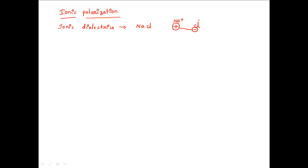In the equilibrium position, the distance between the ions is some value x. But whenever you apply an electric field onto this ionic crystal, the positive ion moves in the field direction and the negative ion moves in the opposite direction. The positive ion moves a distance x1 and the negative ion moves a distance x2 from the equilibrium position. These ions get separated and dipoles are formed, and this phenomenon is known as ionic polarization.